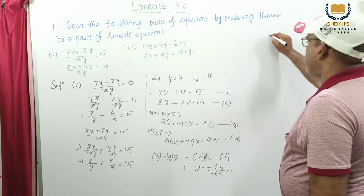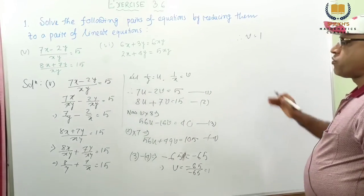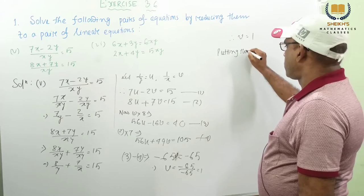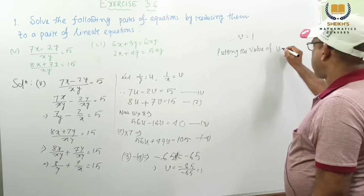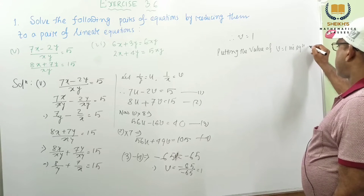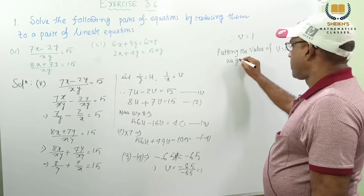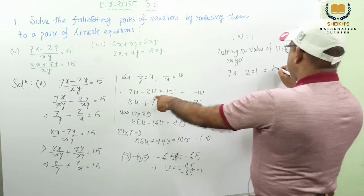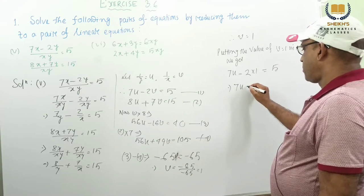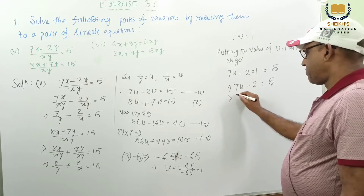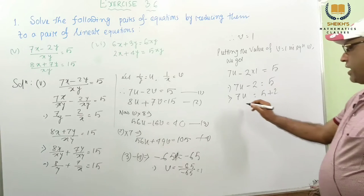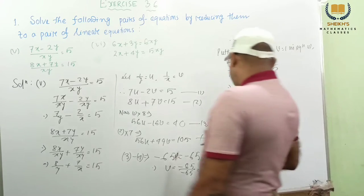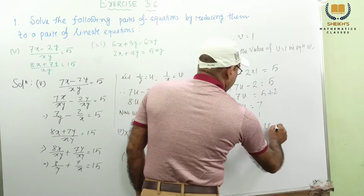So putting the value of v equal to 1 in equation 1, we get: 7u minus 2 into v, v means 1, this is 5. So 7u minus 2 equal to 5. This implies 7u equal to 5 plus 2, 7u equal to 7, and u equal to 7 by 7, we get 1. Therefore we get u equal to 1, v equal to 1.